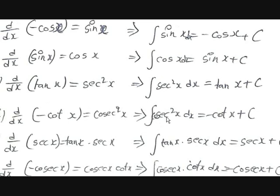Similarly, the integral of csc²x dx is equal to −cot x plus c. And d/dx of sec x is sec x · tan x, so the integral of tan x · sec x dx is equal to sec x plus c. The derivative of −csc x is csc x · cot x, so the integral of csc x · cot x dx is equal to −csc x plus c.